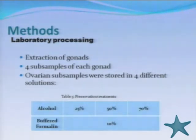After grouping the samples, we extracted the gonads and took four samples from each gonad. The samples were stored in four different solutions: alcohol at 25%, 50%, and 70%, and buffered formalin at 10%.